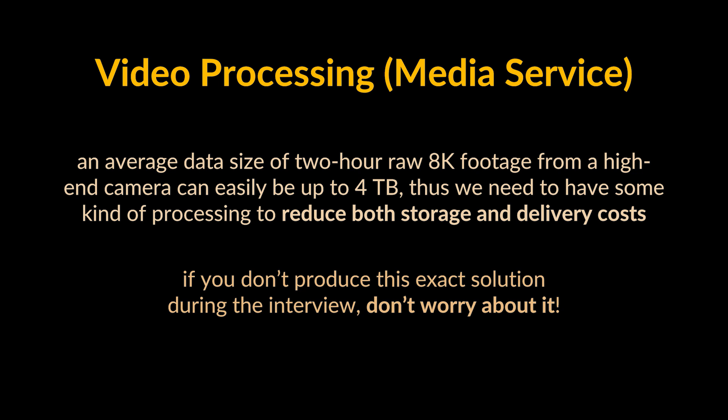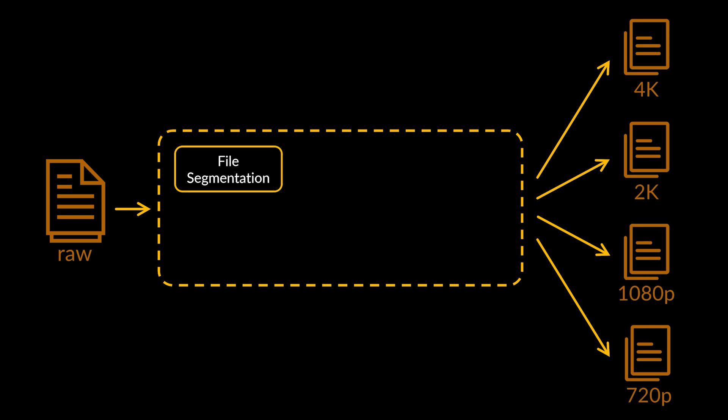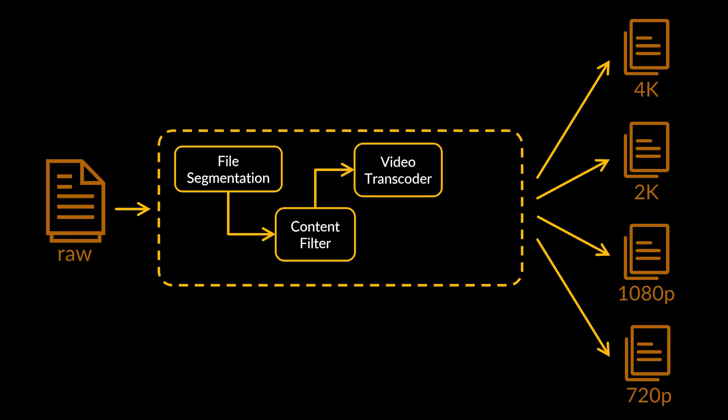We need some kind of processing to reduce both storage and delivery costs. The first step of our processing pipeline is file segmentation — the process of splitting a file into smaller pieces. It helps eliminate duplicate copies of repeating data on storage and reduces the amount of data sent over the network by only selecting changed segments. The next step is content filtering, which checks if the video adheres to the platform's content policy and is eligible for upload.